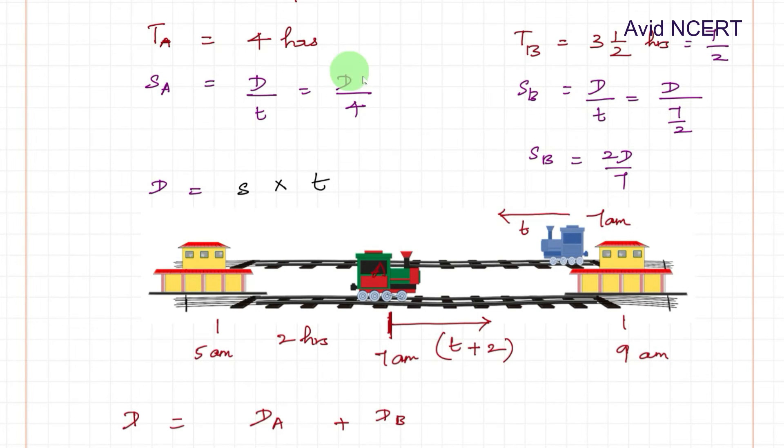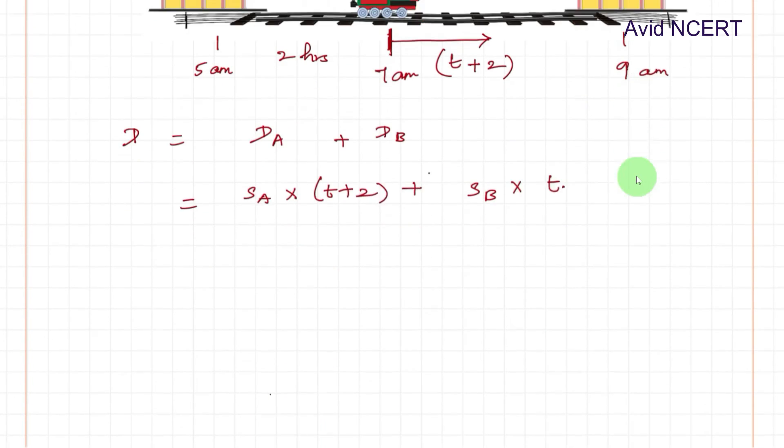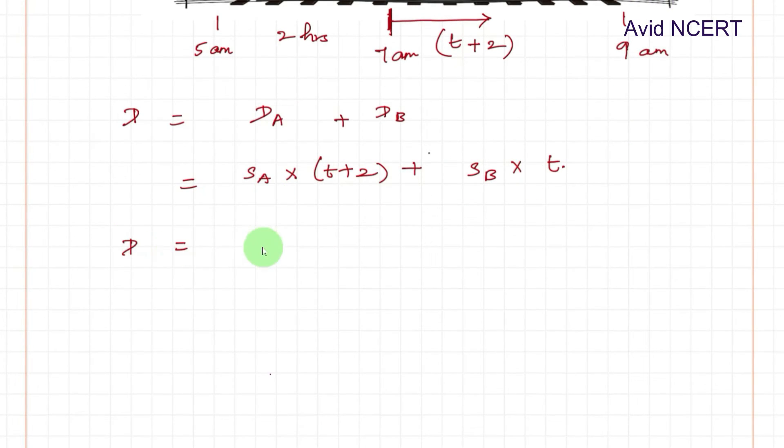So SA equals D by 4 and SB equals 2D by 7, substituting here. So D equals D by 4 into T plus 2 plus 2D by 7 times T. So all the D gets canceled. So 1 equals T plus 2 divided by 4 plus 2T by 7.